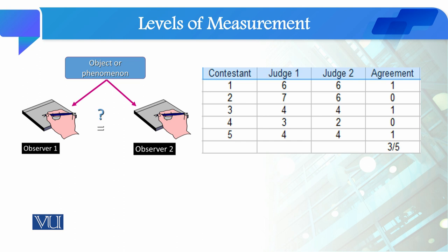Contestant 1 receives a score of 6 from both Judge 1 and Judge 2. Contestant 3 receives a score of 4 from both judges, and contestant 4 also receives a score of 4 from both judges. After having the judgment scores, we check the agreement between the judges. For contestant 1, both judges have an agreement, so we give it a value of 1.